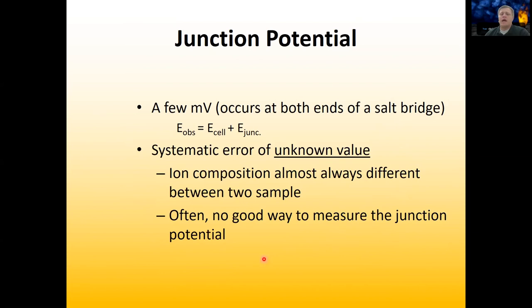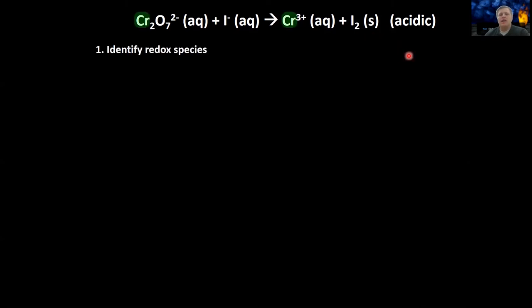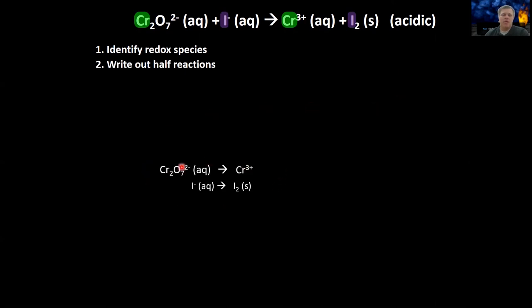That does it for our electrodes for today. Now we're going to move on to balancing redox reactions, starting with an example: chromate reacting with I-minus giving Cr3+ and I2 as products. As you can see, there are two chromiums on the left and one on the right, one iodine on the left and two on the right, some oxygen on the left not on the right, and the charge is definitely not balanced. The first step is to identify our redox species and then split them into half reactions.